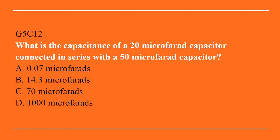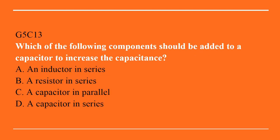G5C12: what is the capacitance of a 20 microfarad capacitor connected in series with a 50 microfarad capacitor? A. 0.07 microfarads. B. 14.3 microfarads. C. 70 microfarads. Or D. 1,000 microfarads. Correct answer is B: 14.3 microfarads. G5C13: which of the following components should be added to a capacitor to increase the capacitance? A. An inductor in series. B. A resistor in series. C. A capacitor in parallel. Or D. A capacitor in series. Correct answer is C: a capacitor in parallel.